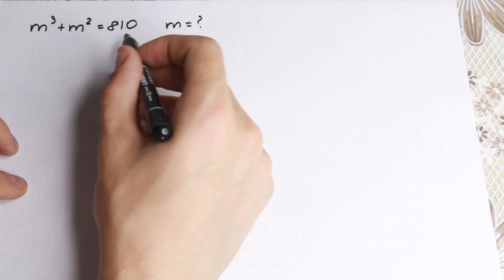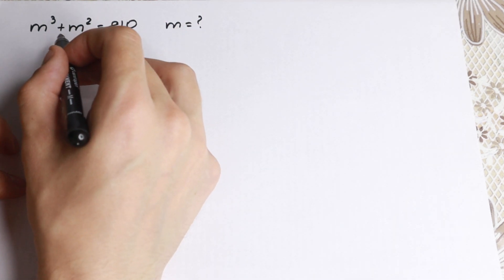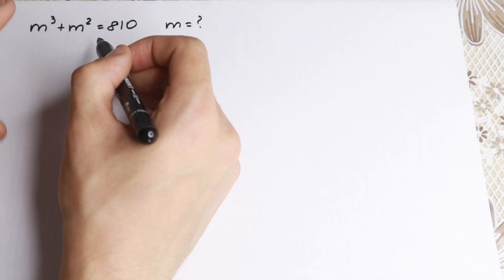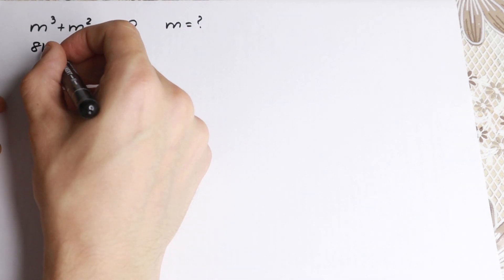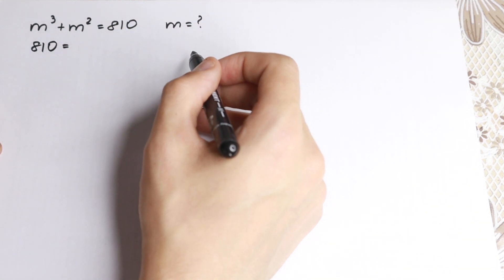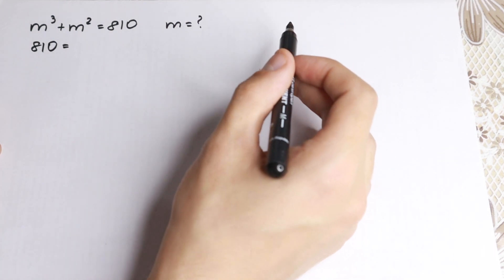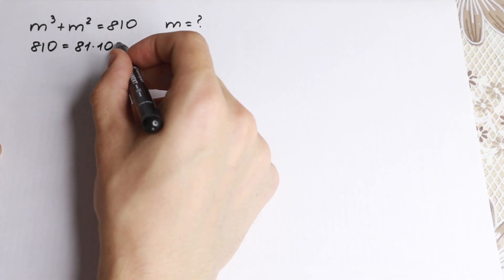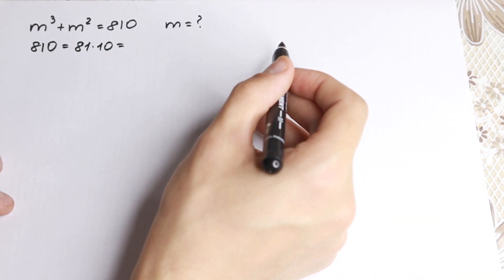We have 810 on the right-hand side and the expression on the left-hand side, so let's leave the left-hand side as it is — nothing changes there. For the right-hand side, we have 810. The first obvious way to write it is as 81 times 10.